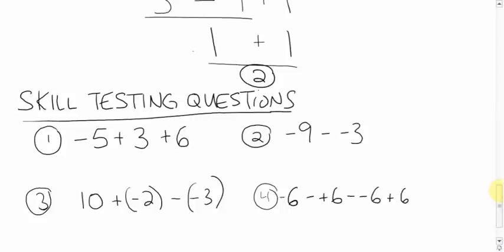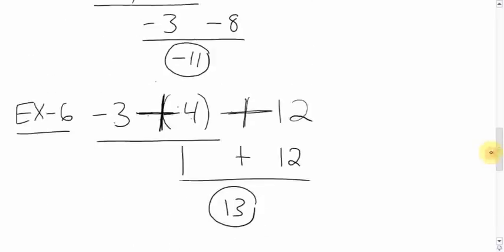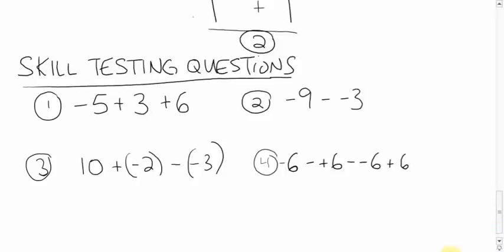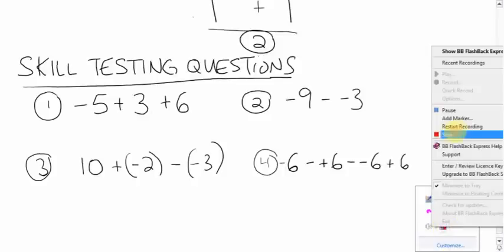Here are your skill testing questions — only 4 this time. Please show your work exactly the way I showed above: underline the first operation, work directly underneath, get rid of double signs first where needed, show all steps, and circle your final answer. Once I see that all 4 are correct and you've copied out all these notes neatly, I will let you proceed to the next worksheet. Talk to you soon, bye bye.